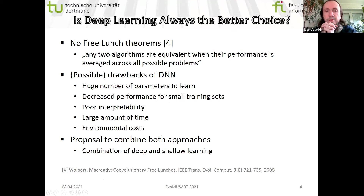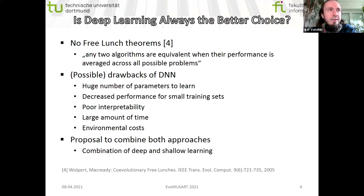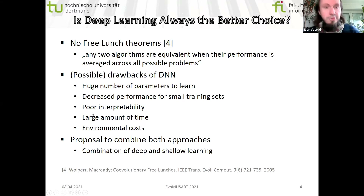Is deep learning always the better choice? There exist no free lunch theorems, which claim that any two algorithms are equivalent when their performance is averaged across all possible problems. So when algorithm A performs better than B on some problems, B may perform better than A on others. There are very different problems also for genre recognition — some genres are well defined, some are very complicated, and we have different training set sizes and features. So I think it's not a good idea to say deep learning is always the better choice. Several drawbacks of deep neural networks exist — though they are not always drawbacks and there are approaches to deal with them.